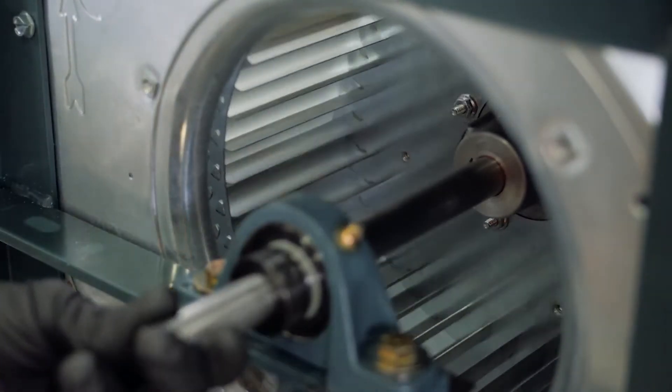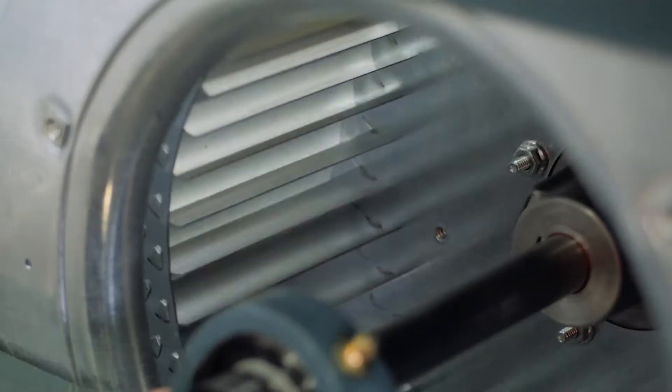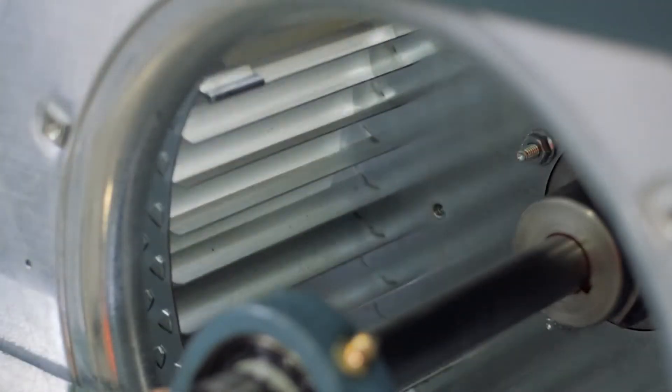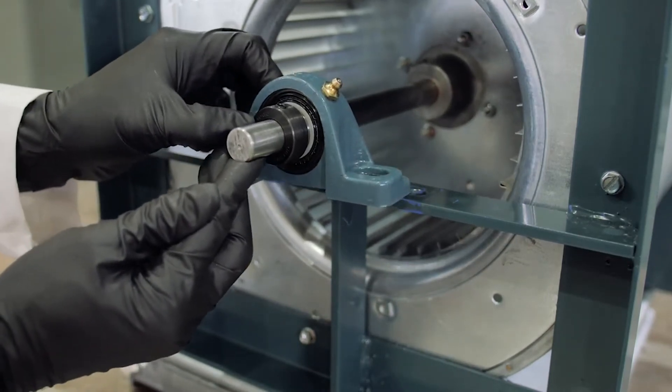Turn the shaft again by hand. If the resistance has noticeably increased, it could be an indication of an uneven mounting surface. If this occurs, remove the bearing and ensure the mounting surface is flat.